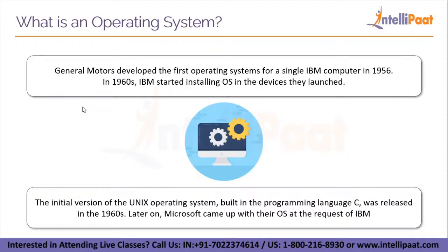This is a brief history of operating systems. General Motors developed the first operating system for a single IBM computer in 1956, and in the 1960s IBM started installing operating systems in devices released for public use. Before 1956, the earliest computers were mainframe computers which lacked any form of operating system. Each user would arrive with their program or data and used punched paper cards, magnetic tapes, or paper tapes to interact with the computer hardware.